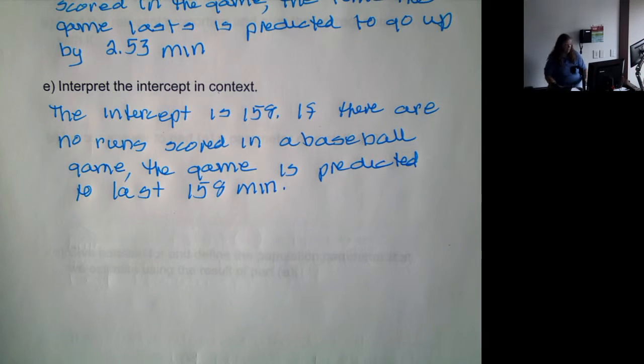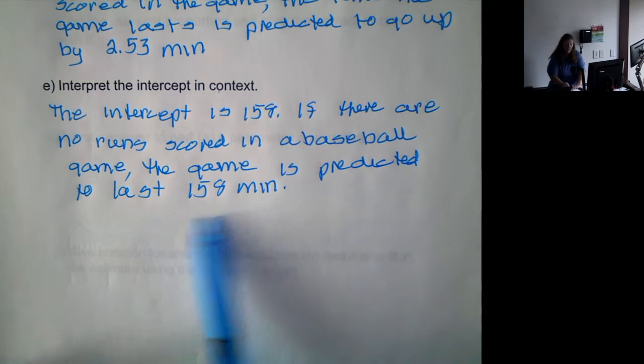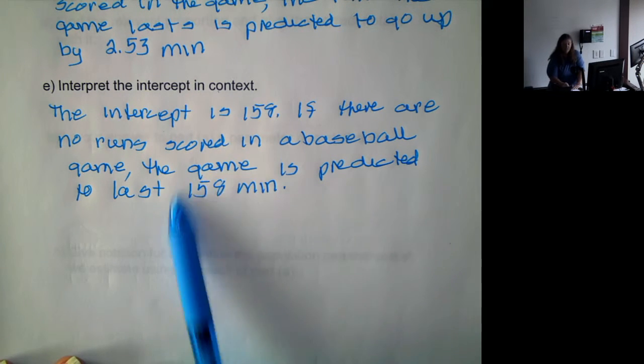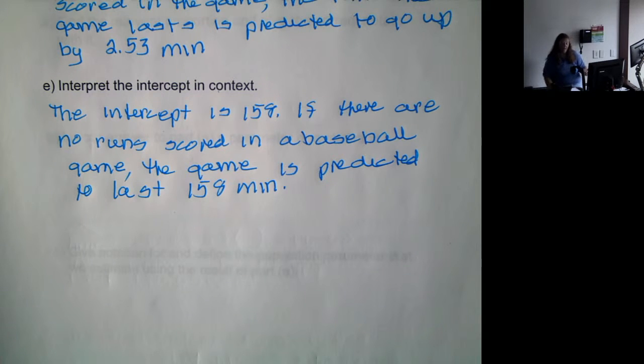However, we know, or those who follow baseball know, that a game would have extra innings until at least one team scored. So this is kind of an unreasonable y-intercept. Or you might say that the nine innings would last 158 minutes, since we know there would be extra innings in order to declare a winner.